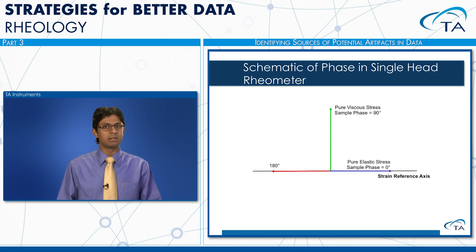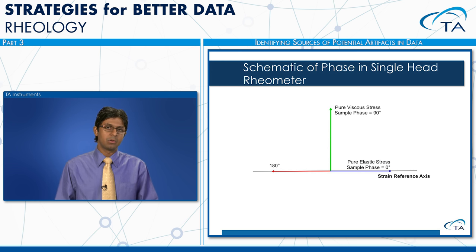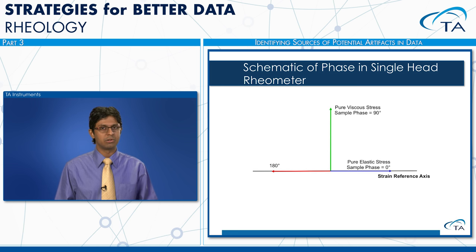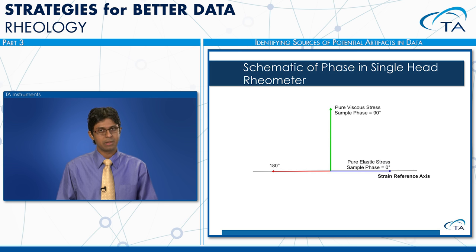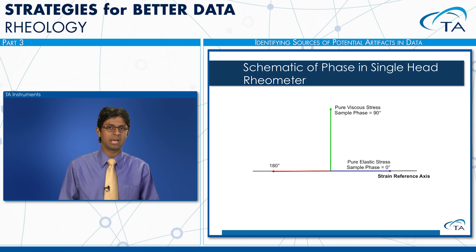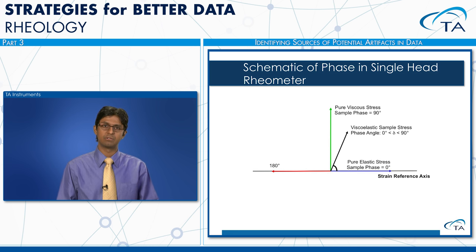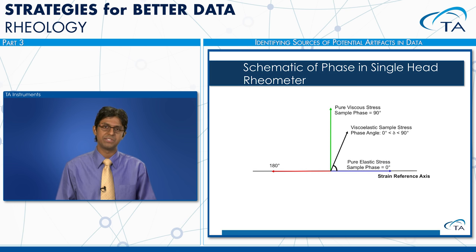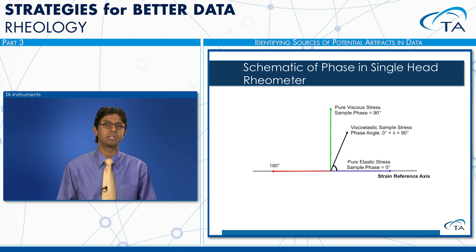When looking at the phase angle in a single head rheometer during an oscillation experiment, there are two possible cases. For a perfectly elastic material, the phase angle is zero degrees. For a perfectly viscous material like a fluid, the phase angle is 90 degrees. For a viscoelastic material, the phase angle is somewhere between zero and 90 degrees — the closer to zero, the more elastic; the closer to 90, the more viscous or liquid-like.